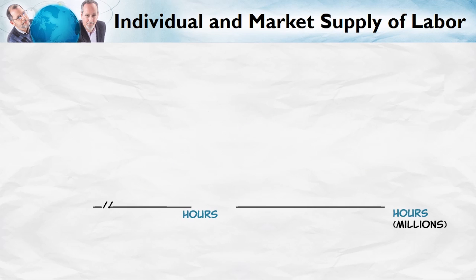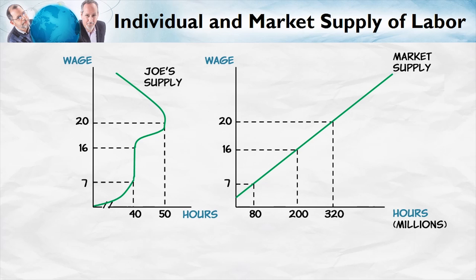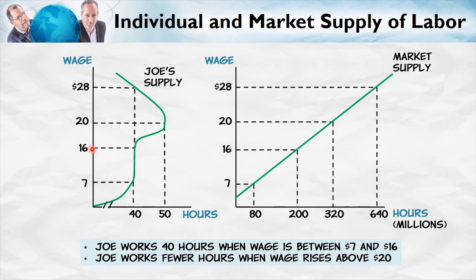Let's add one qualification to the supply of labor. We need to make a distinction between an individual's supply curve for labor and the market supply curve. Suppose we have a janitor — let's call him Joe — and his wage is currently $16 an hour and he's working 40 hours a week. If the wage were to increase to $20 an hour, Joe might decide to work more — 50 hours per week — to take advantage of that higher wage. But suppose the wage increases even more to $28 an hour. Will Joe choose to work more? Not necessarily.